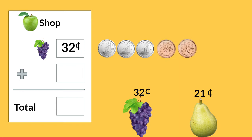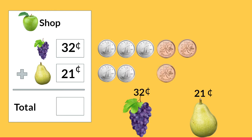Now we're going to buy a pear and write the price for the pear on our receipt. The pear costs 21 cents. Let's count that in dimes and pennies: 10, 20, 21. 21 cents.